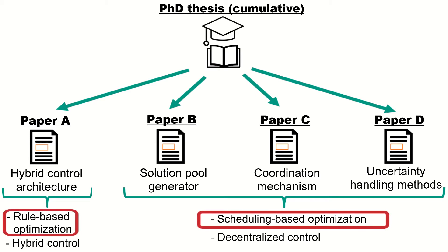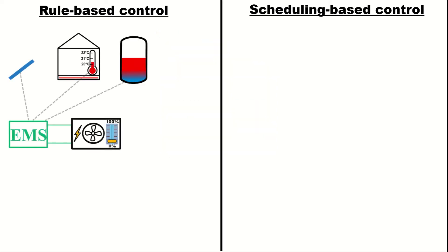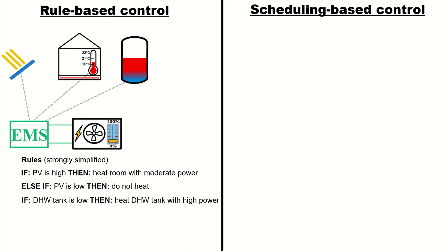Now I'm going to explain the difference between rule-based and scheduling-based optimization. When I talk about rule-based or scheduling-based control, I'm always referring to the control of the electric heating device. In this rule-based setup we have an energy management system, a heat pump that can either heat up the building or the hot water tank, and a PV panel. The energy management system constantly gets data from the solar panel, the building's room temperature, and the hot water tank, and based on that there are some simplified rules.